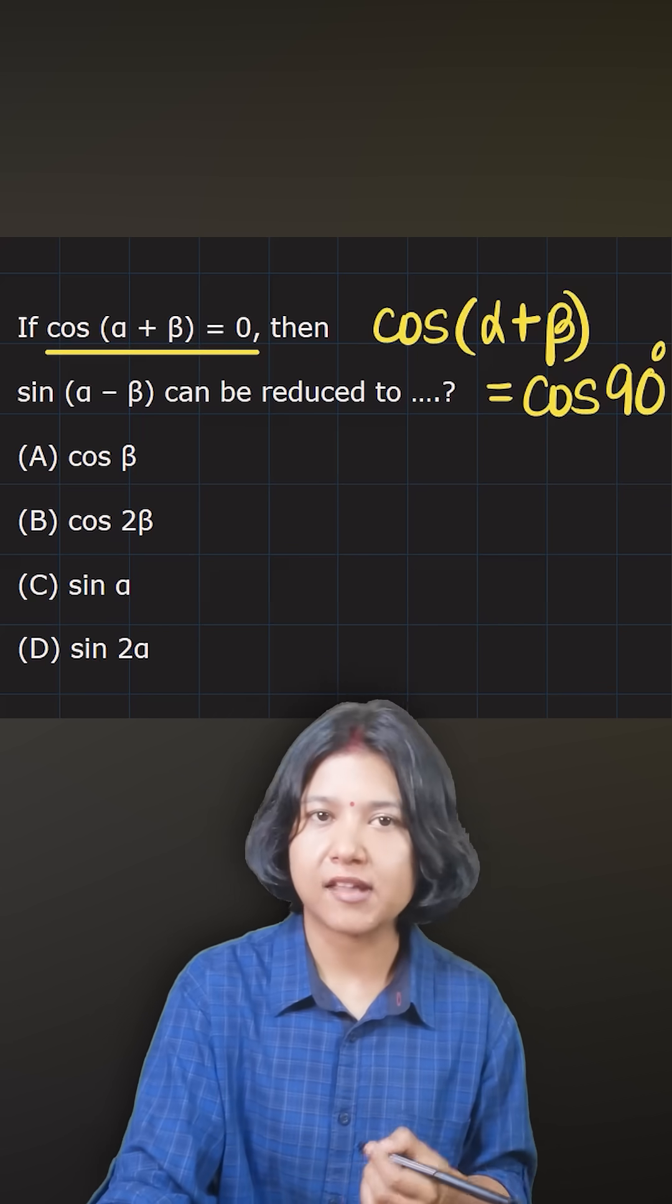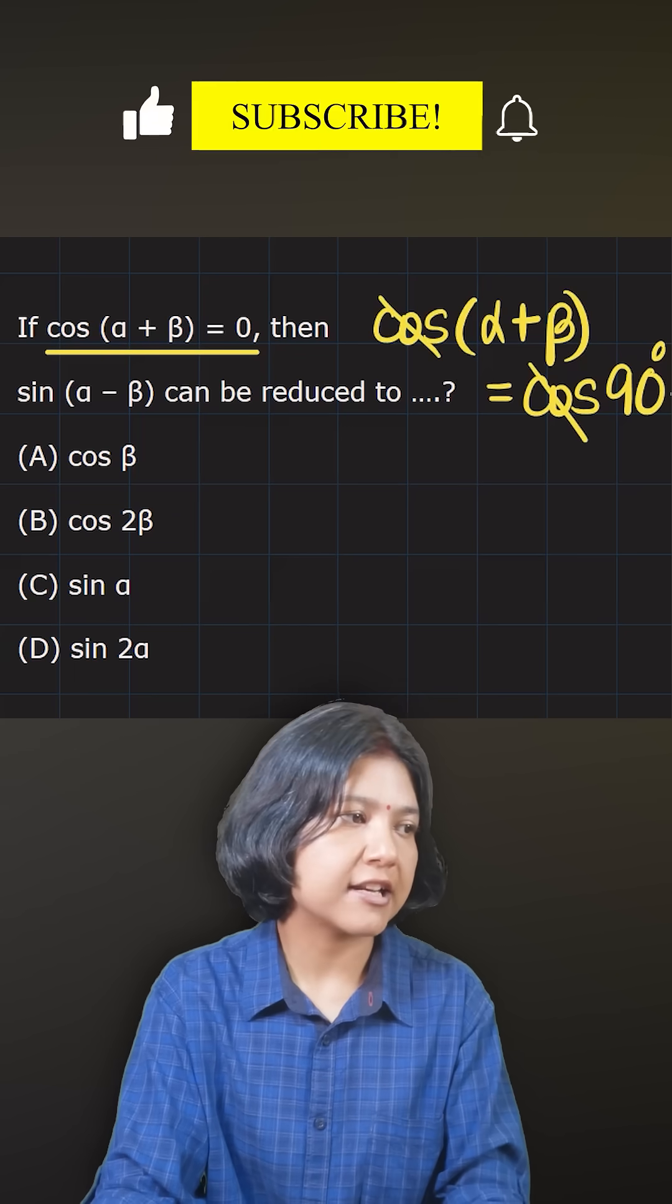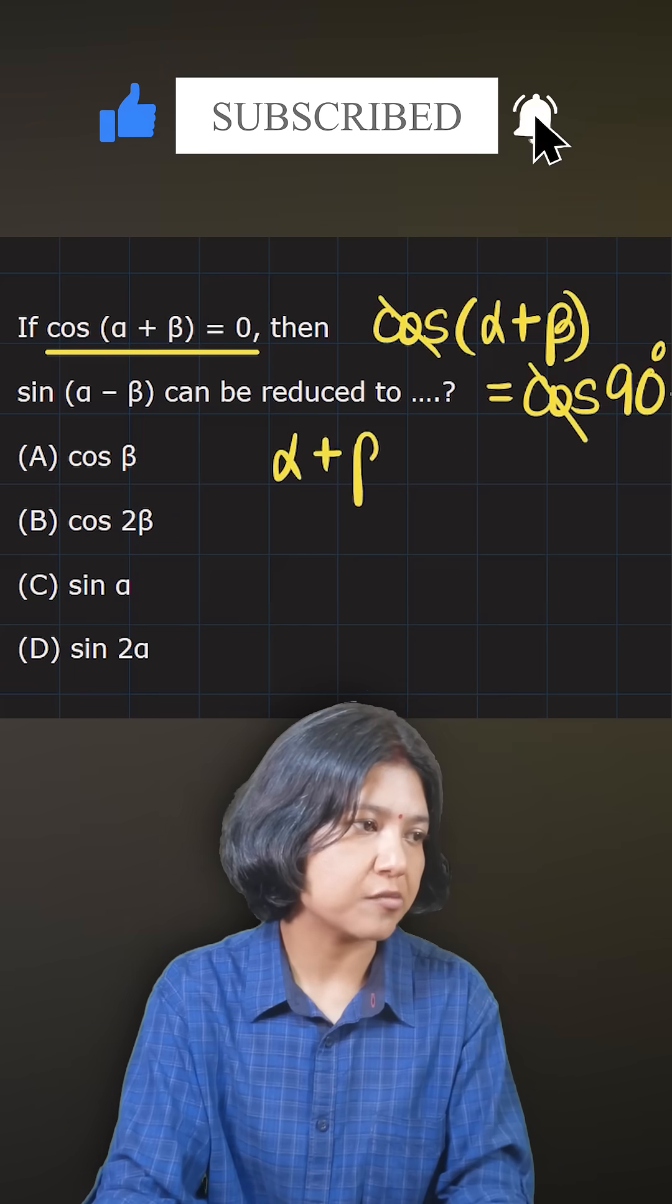Now because I have cos something equals cos something, I can get rid of the cos function, telling me that α + β has to be 90.